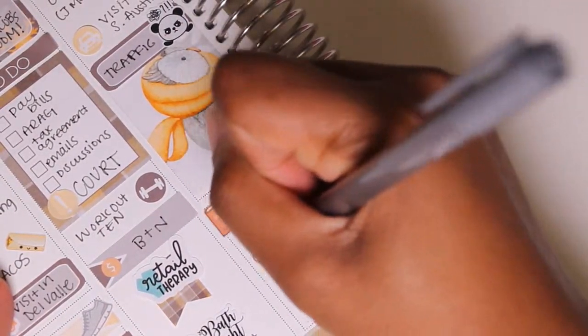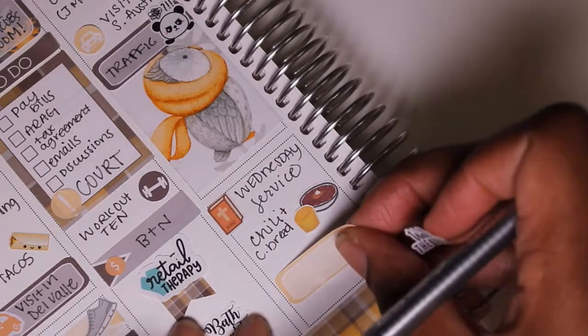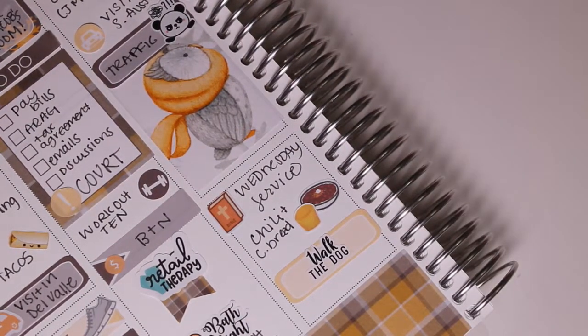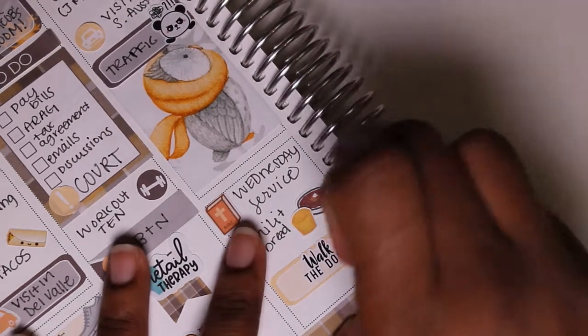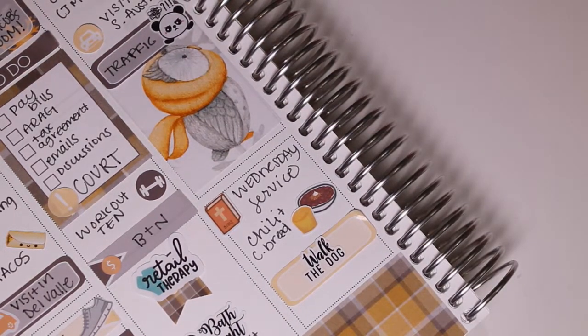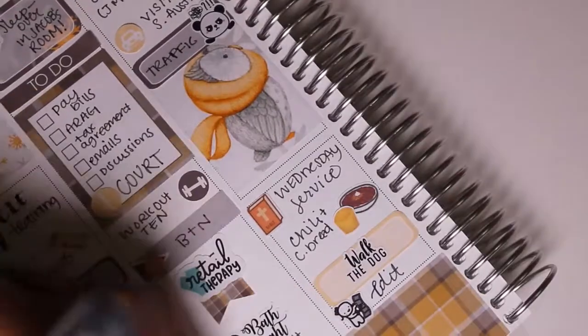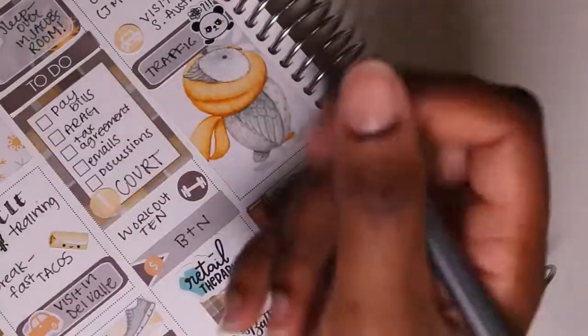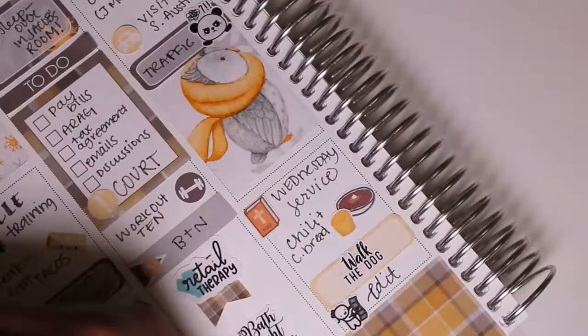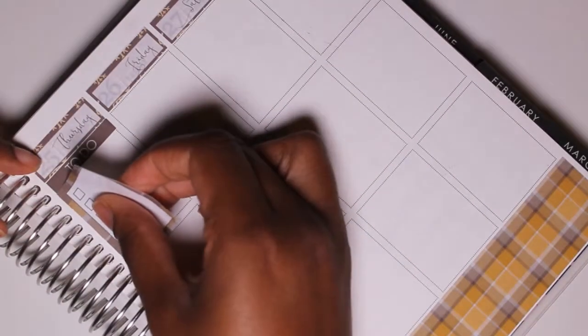Then I wanted to note that I had chili and cornbread and I got those stickers from Plans with Vanessa and I literally love my husband's chili and I bought those stickers with that in mind so I really did want to note that. Then I walked my dog Jackson. Then I wanted to edit a plan with me and that sticker is from Once More with Love. I forgot to mention that the retail therapy sticker was from the Honeybee Shop and the bath night was from Planner Frenzy.